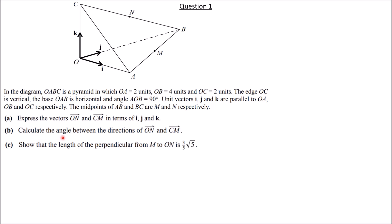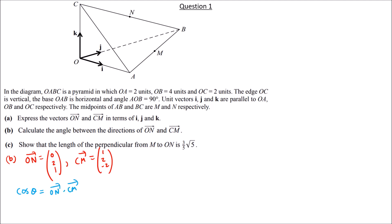Part B: Calculate the angle between the directions of ON and CM. From part A, vector ON = (0, 2, 1) and vector CM = (1, 2, −2). We use the dot product formula: cos θ = (ON · CM) / (|ON| × |CM|).